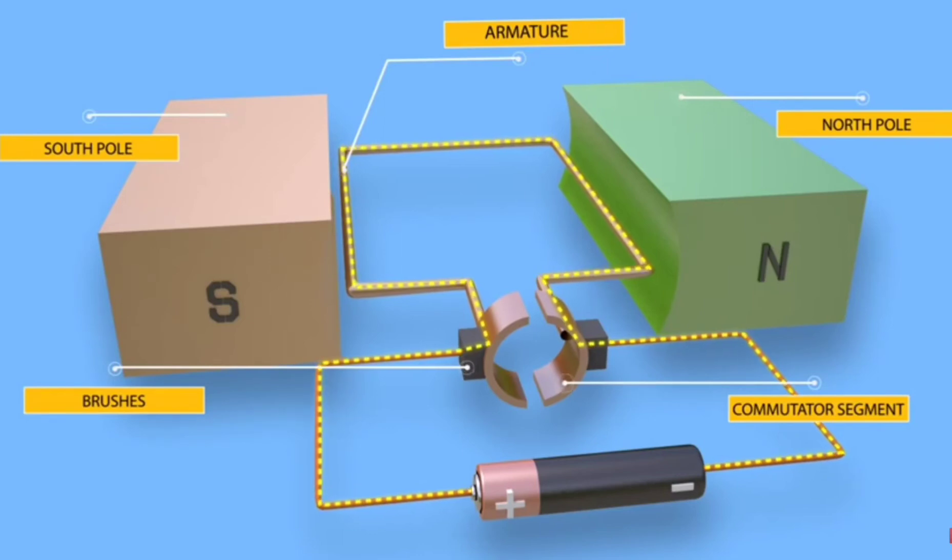As we see, the positive terminal of the battery is connected to the left conductor of the turn and the negative terminal is connected to the right conductor of the turn.